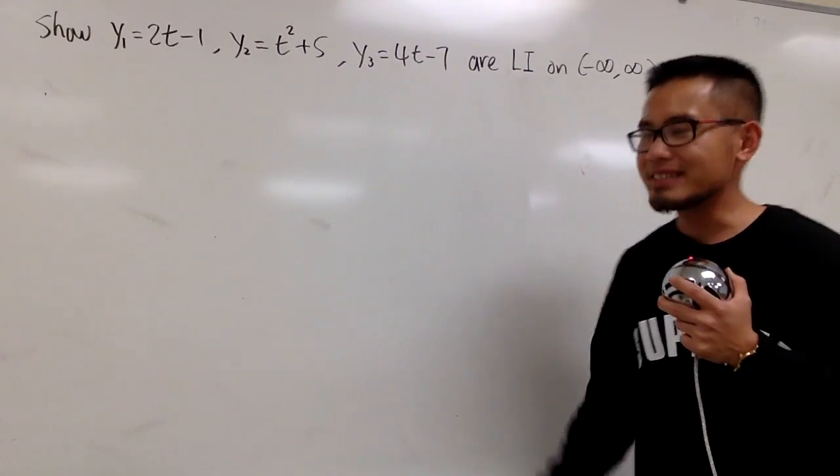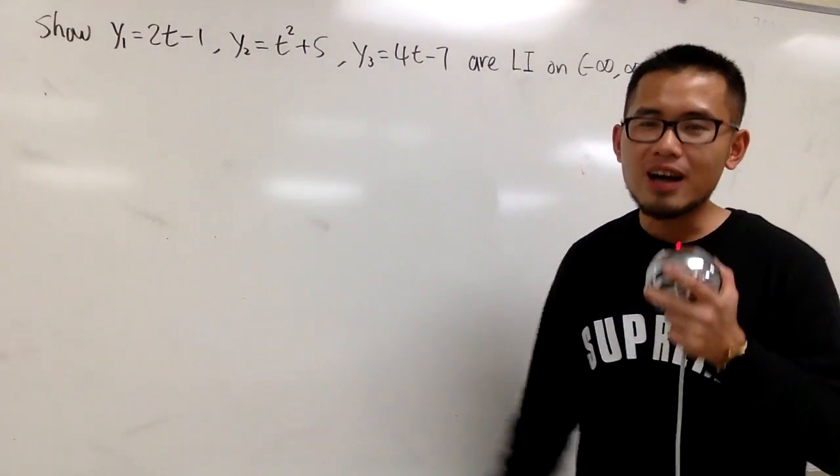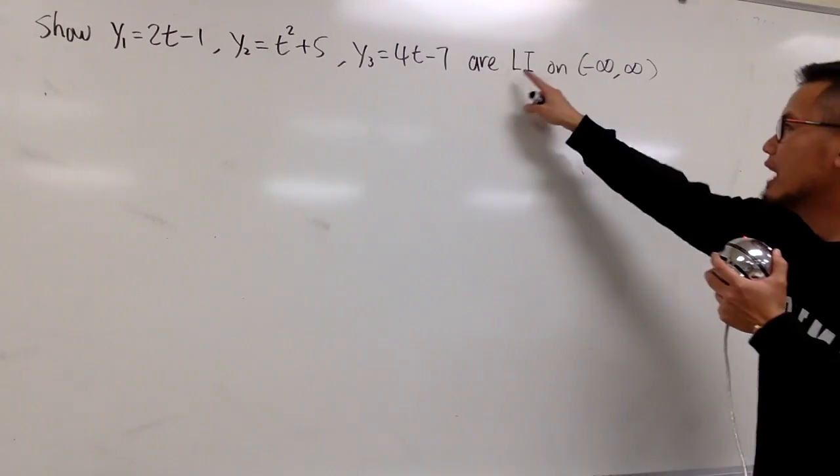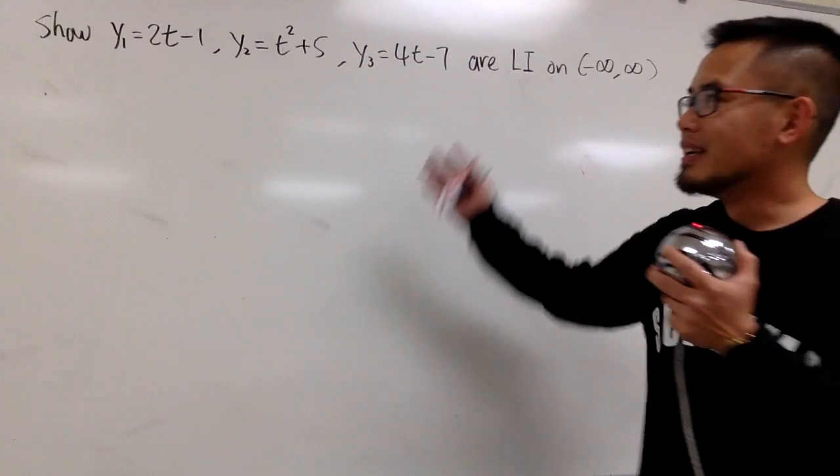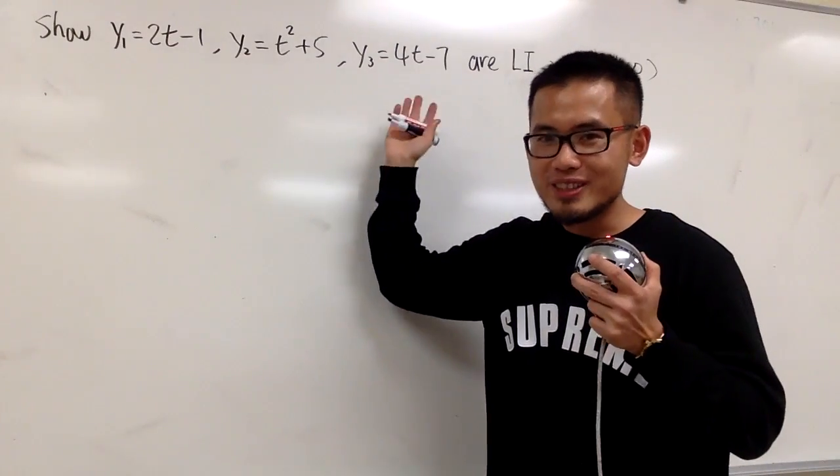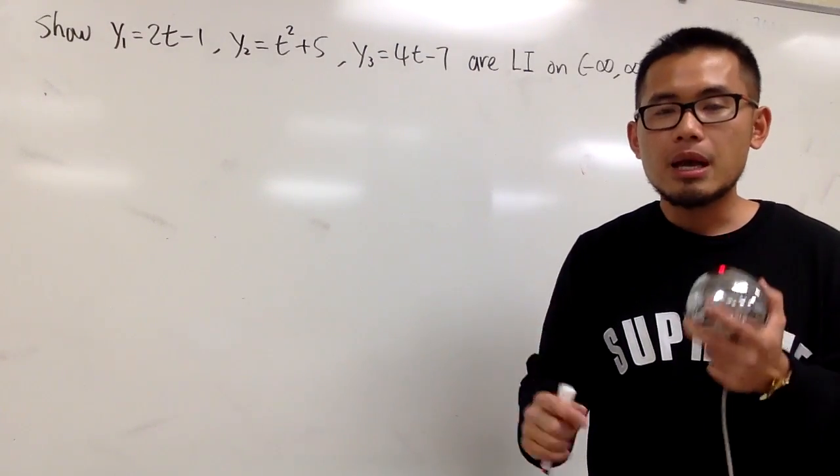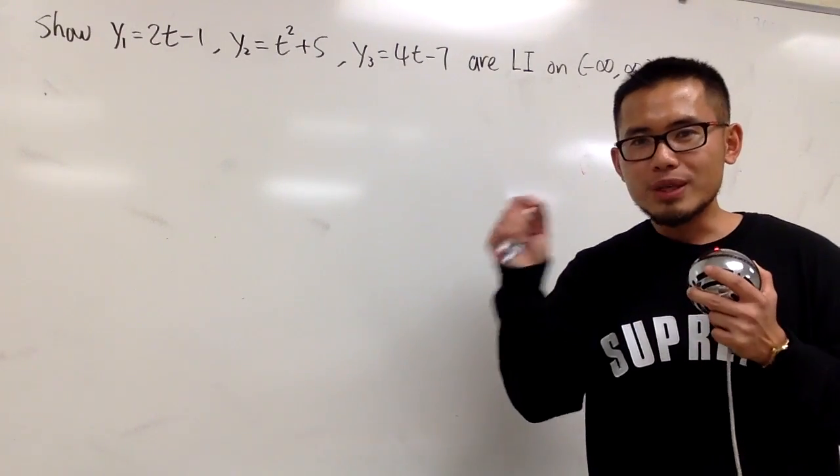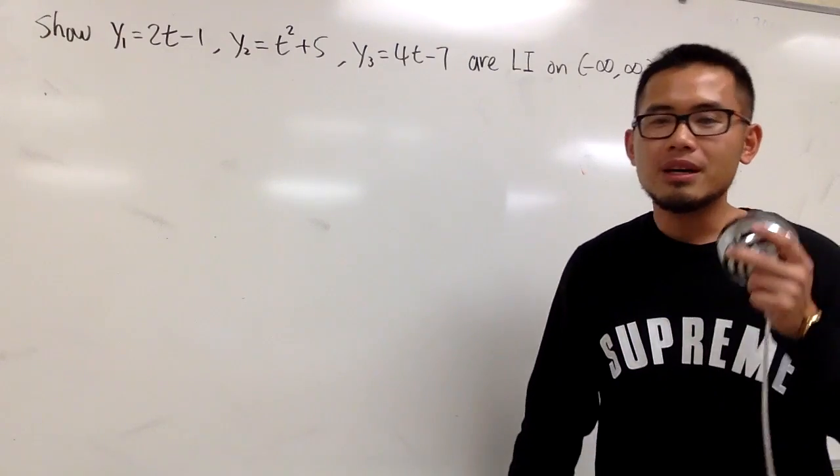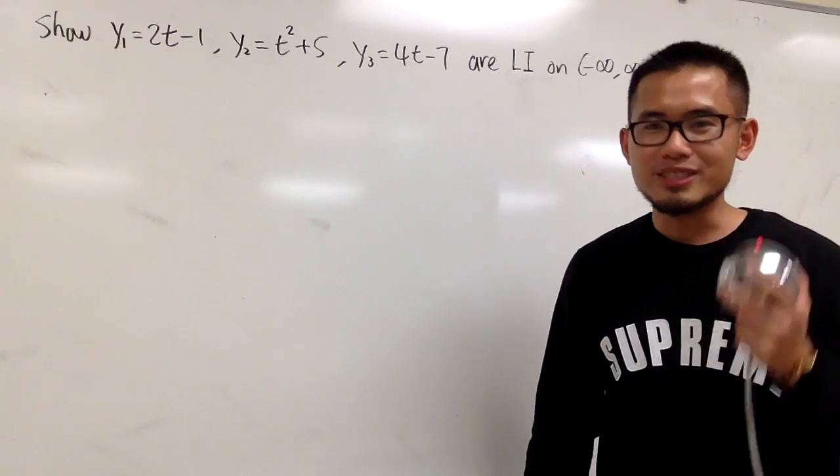In this video, I will once again show you how to show that these three functions are linearly independent. In the previous video, I showed you the same three functions are linearly independent by using the definition with c1, c2, c3. We saw that c1, c2, c3 all had to be zero in order to make that equation zero.